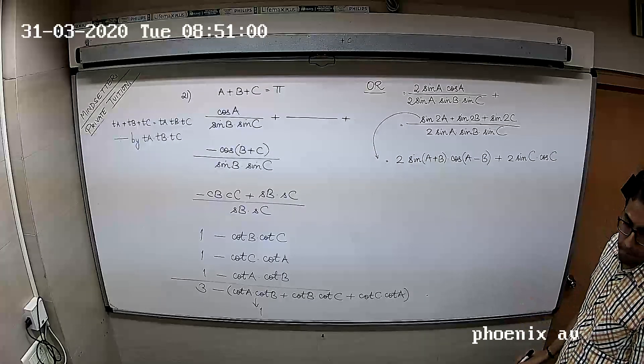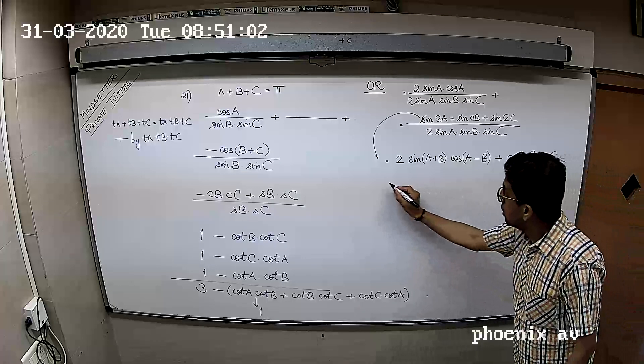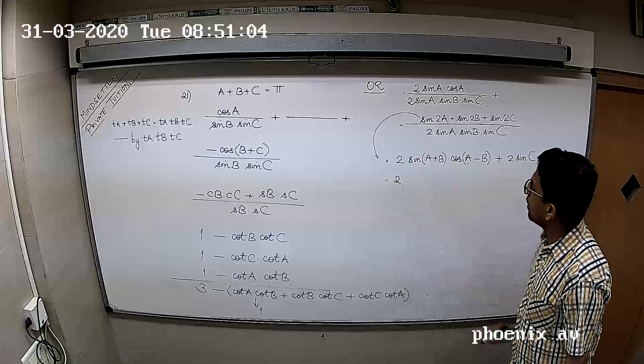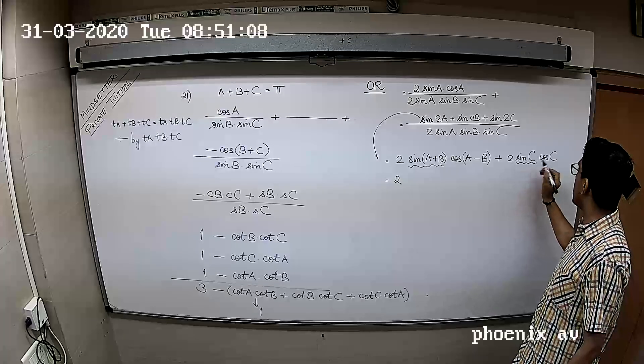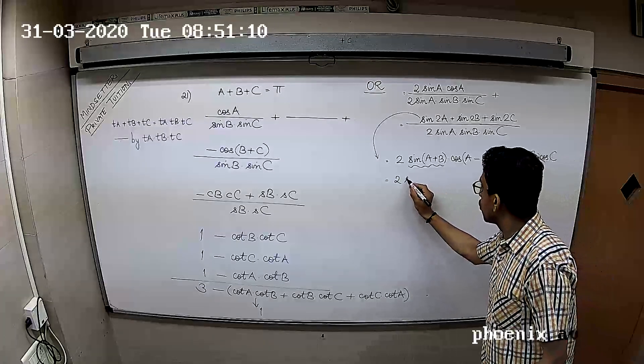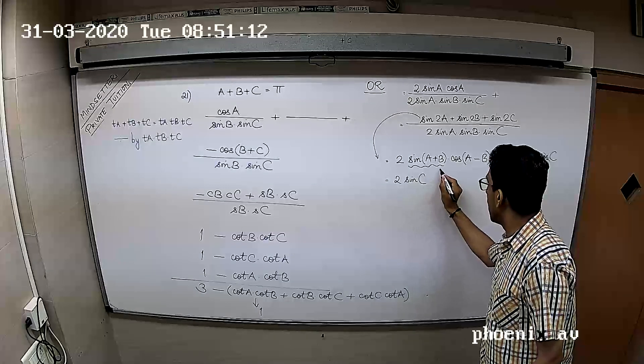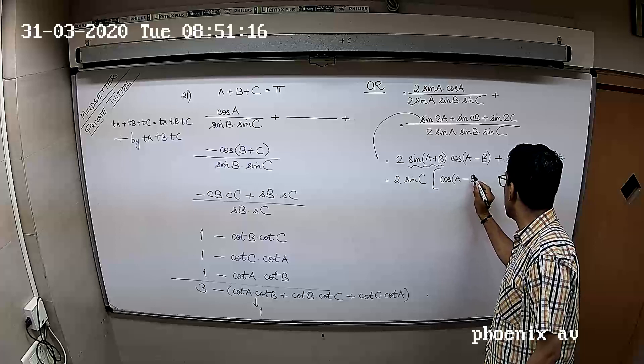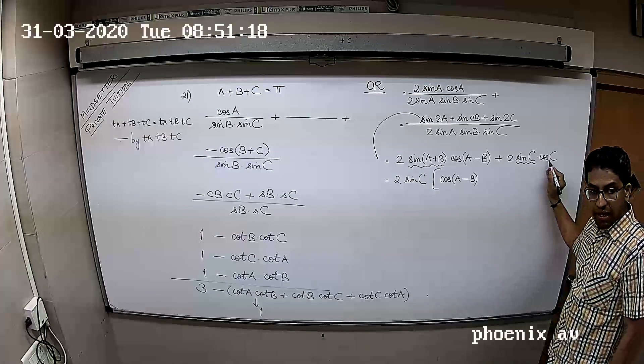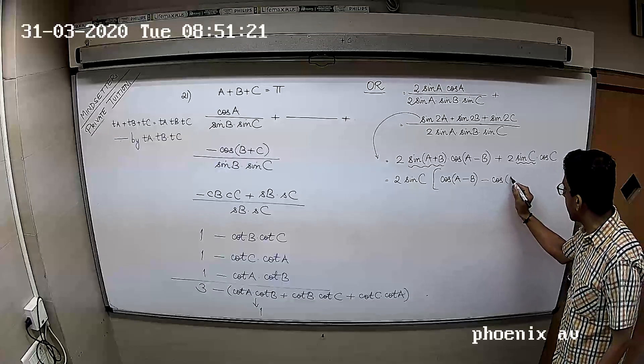Now if we take common, sin of A plus B and sin of C is the same, so sin C. And cos of A minus B plus cos of C, cos of C is minus cos A plus B.